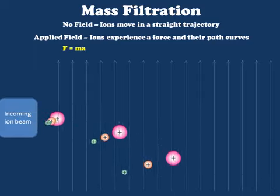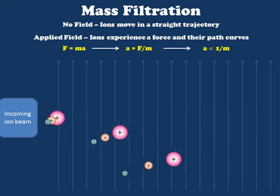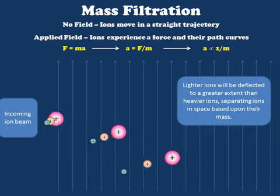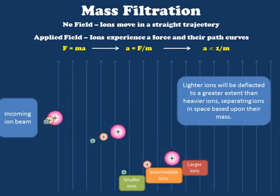Because force is equal to mass times the acceleration of an object, we can calculate that the acceleration of any object must be equal to the force divided by its mass. In this instance, because force is constant for all ions, we can determine that acceleration is proportional to the reciprocal of the ion's mass. In other words, lighter ions will be deflected to a greater extent than heavier ions, causing them to be separated in space. The smaller green-colored ions are moving with a greater degree of curvature, meaning they reach the bottom of the screen at a location closer to the source. Now that we have separated our ions in space, we need to detect exactly where they have gone so that we can back-calculate their masses.